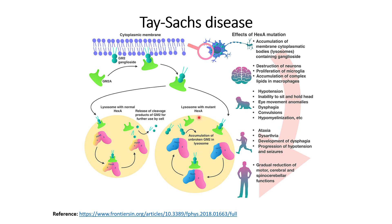The broken-down products are released into the cytoplasm of the cells for further use. Whereas in the case of mutant HEXA, where HEXA is not able to perform its function because of disruption in transcription, translation, and native structure formation, the GM2 gangliosides will not be able to break down. Instead, they will accumulate within the lysosome of the cells, and with time the lysosome will get overcrowded with GM2 gangliosides.